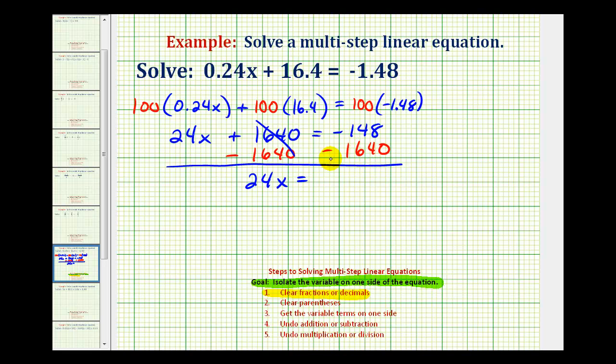Remember, we can write this as an addition problem if we want to. Minus positive one thousand six hundred forty is the same as adding negative one thousand six hundred forty. So this is equivalent to negative one hundred forty-eight plus negative one thousand six hundred forty.